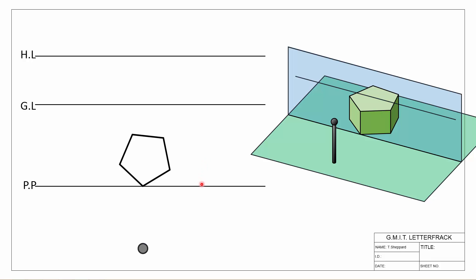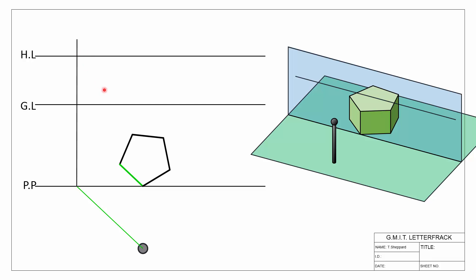We're going to reinforce what we saw in the last video by showing how to locate the vanishing point for each of our directions. Starting with direction number one, highlighted in green — from our spectator we look parallel to that direction. Where that hits the picture plane locates our vanishing point, which we then project up into our horizon line. If the line is level — not sloping upwards or downwards — the vanishing point will always be on the horizon line.